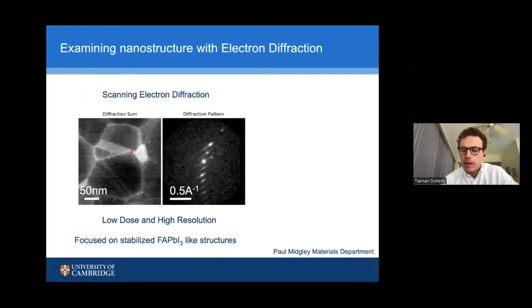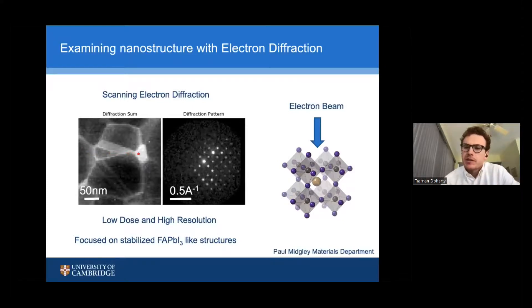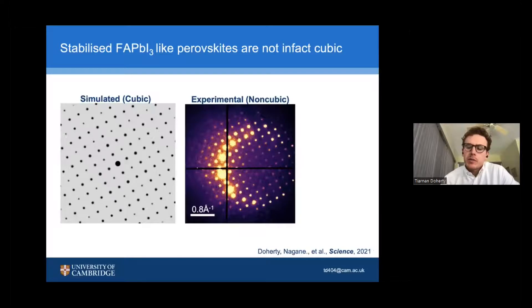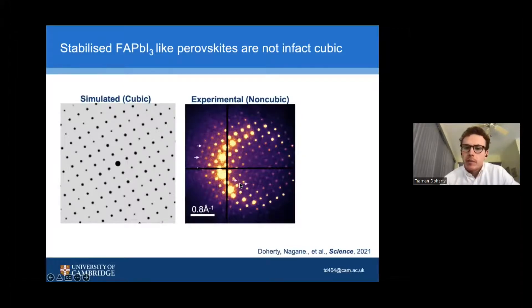Taking scanning electron diffraction measurements and looking at one of our stabilized perovskite structures to see what the local structure is, we see something very surprising: these perovskites are non-cubic. Everybody assumed they were cubic because formamidinium lead iodide — FAPI — is cubic, but in these stabilized perovskites, they are non-cubic. We can see this by looking carefully at the diffraction pattern. A simulated cubic pattern should look like the one on the left, but experimentally what we observe in the stabilized FAPI-like perovskites are very subtle extra reflections showing up, indicating a lower symmetry unit cell than cubic.